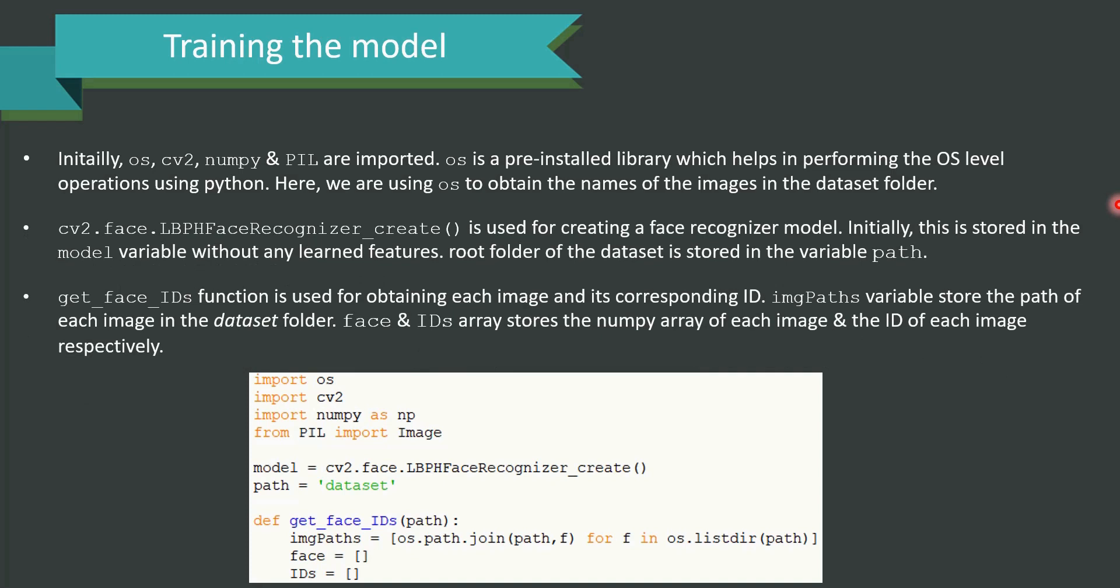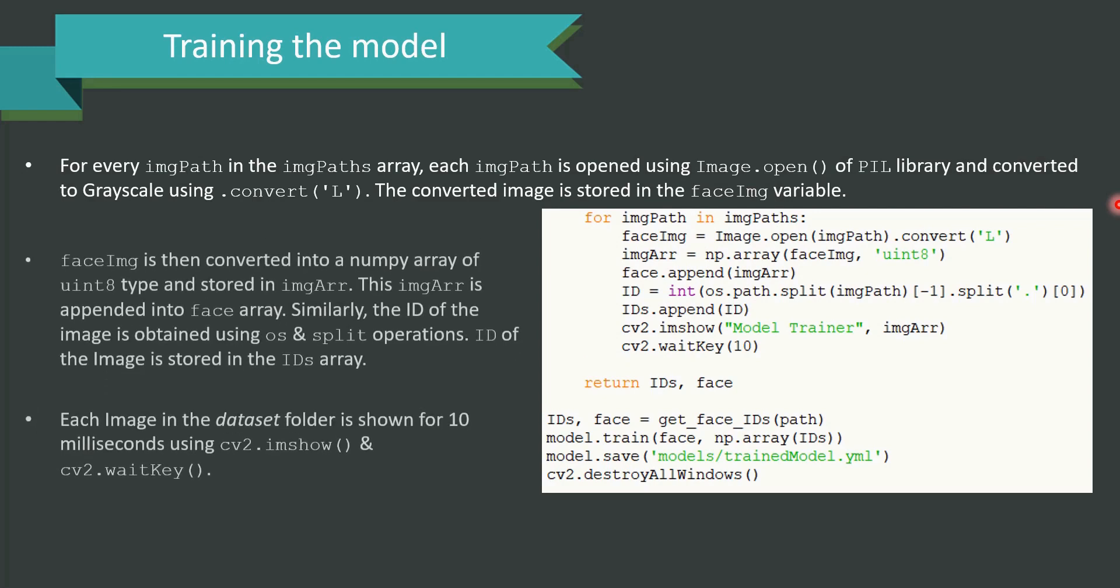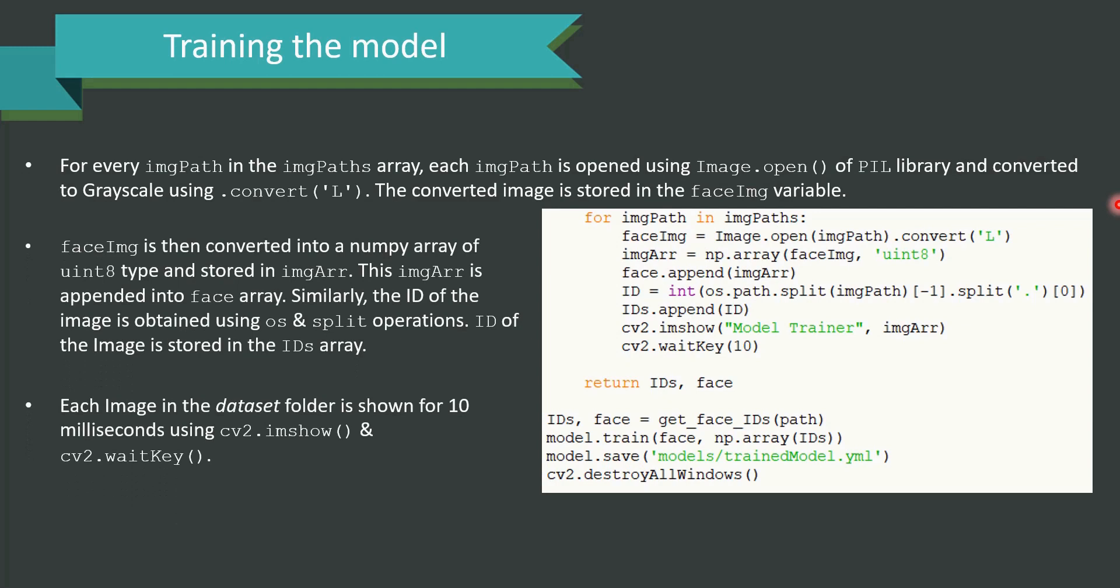GetFaceIDs function is used for obtaining each image and its corresponding id. ImagePaths variable is used to store the path of each image in the dataset folder. Face and IDs array stores the numpy array of each image and the id of each image respectively. For every img_path in the img_paths array, each img_path is opened using Image.open of PIL library and converted to grayscale using .convert of L. The converted image is stored in the face_image variable. Face image is then converted into a numpy array of uint8 type and stored in img_array. The img_array is appended to the face array. Similarly, the id of the image is obtained using os and split operations. Id of the image is stored in the ids array.